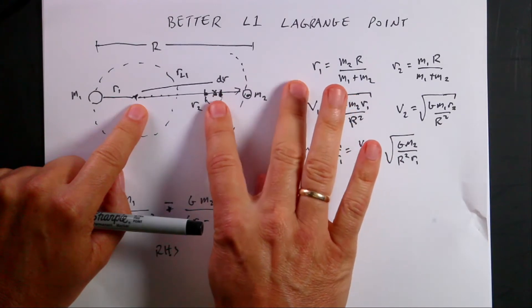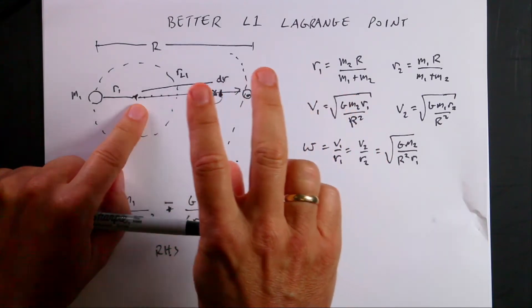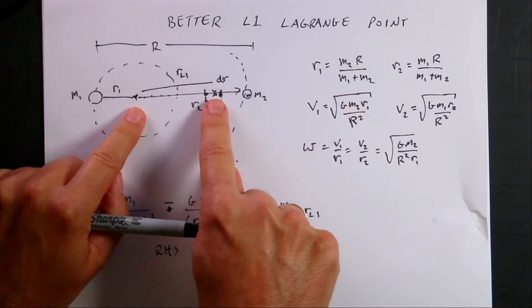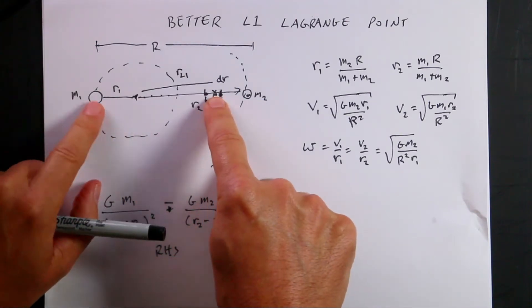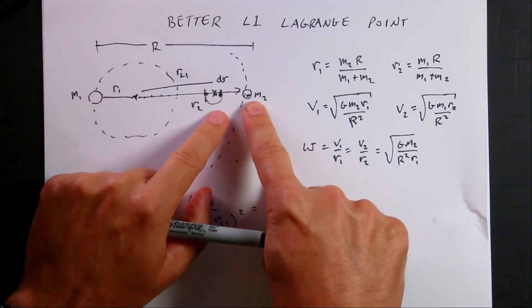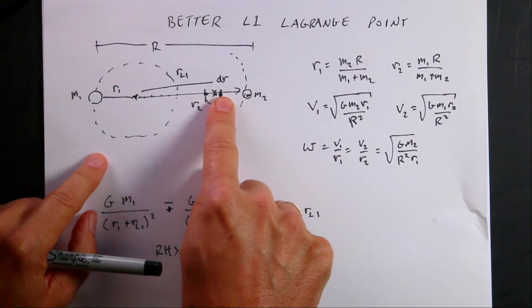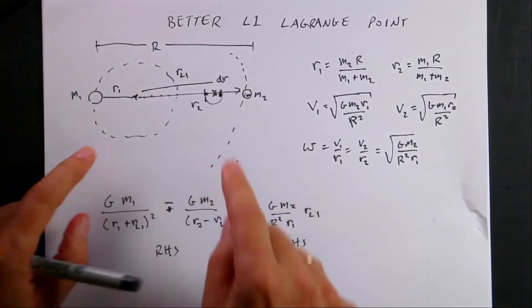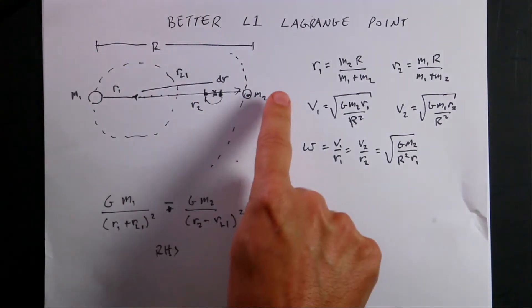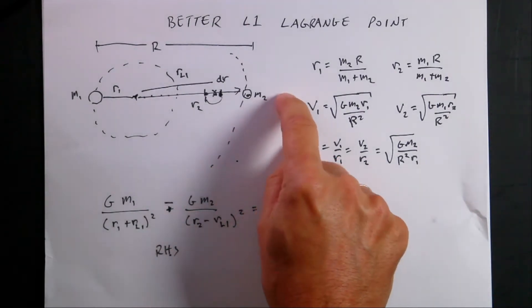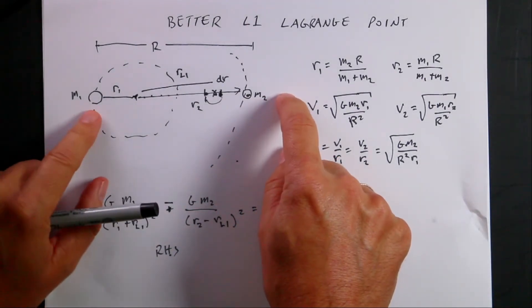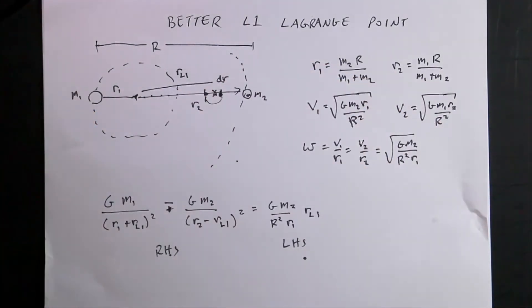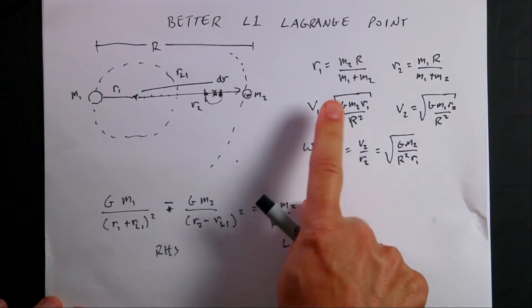And both of these points have two forces acting on them. The point right here has a gravitational force due to this object and that one pulling back, but it has to have the same angular velocity of rotation as those two to stay there. Over here there's also two gravitational forces, m1 and m2, but they're both pulling in the same direction.